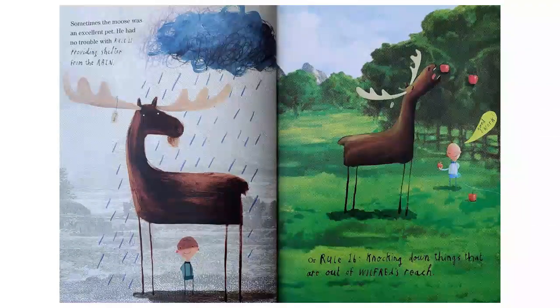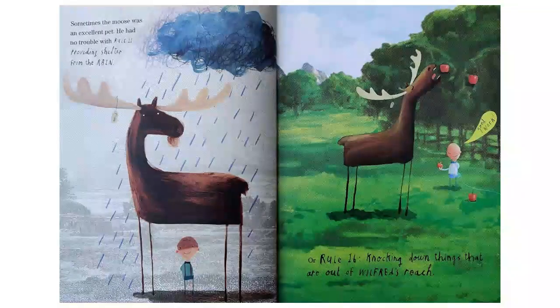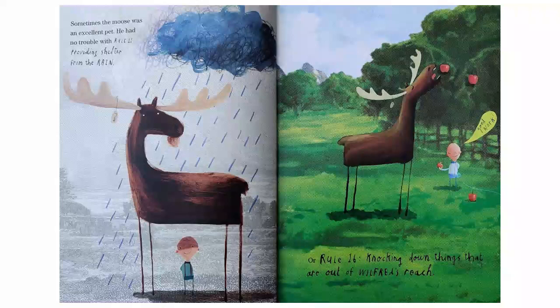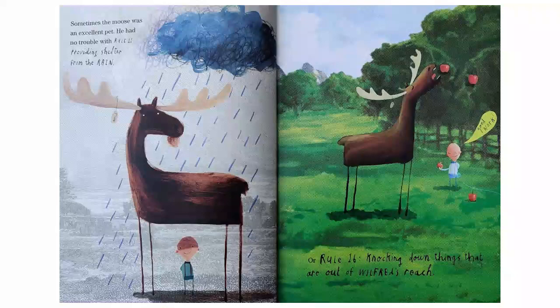Sometimes the moose was an excellent pet. He had no trouble at all with rule eleven, providing shelter from the rain. Or rule sixteen, knocking down things that are out of Wilfred's reach. Good work!